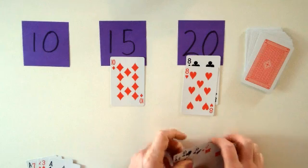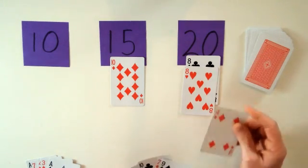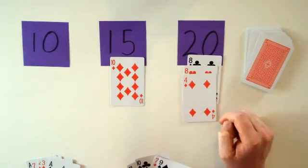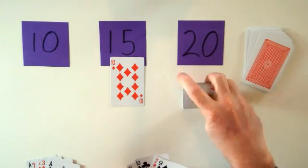And this player also has a 4, luckily. So they can put the 4 on that 8. 8 plus 8 is 16, plus 4 equals 20, so they also collect that pile.